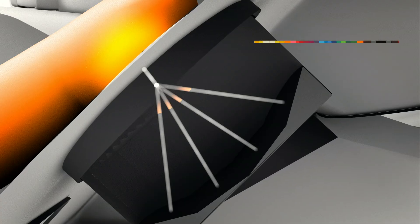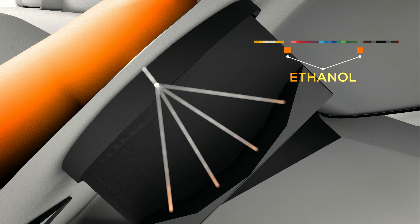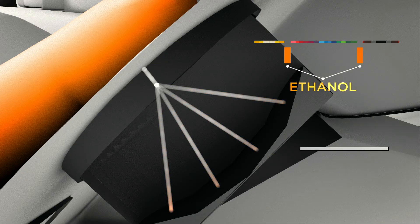Alcohol absorbs specific wavelengths of light. By measuring the light's intensity, the system can precisely pinpoint the driver's blood alcohol level.